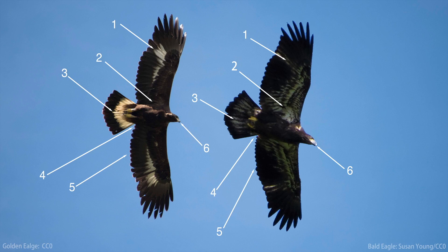Point number one — you can see it on each bird — pointing to the wrists. In immature golden eagles, they have an extensive amount of white at the base of those outer flight feathers, a good number of them. These outer flight feathers have extensive white at the base, whereas in the bald eagle there is white in this general area, but it's not that distinct concentrated amount of white.